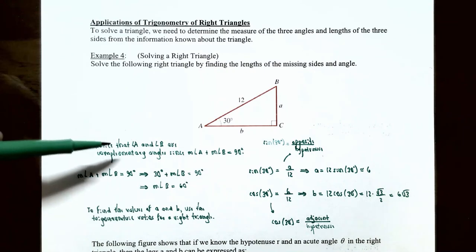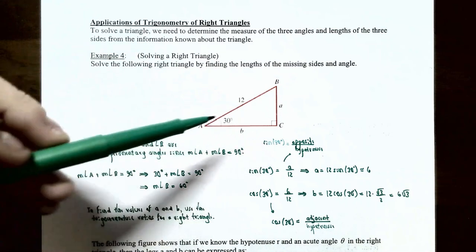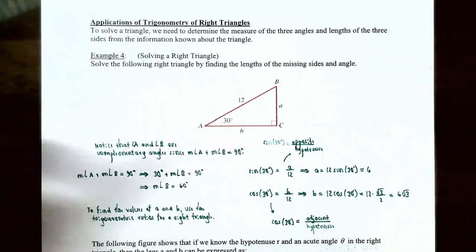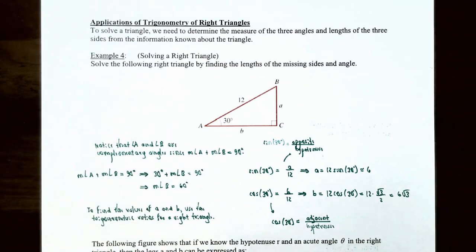Notice that angle A and angle B are complementary angles because we already have a 90-degree angle in this right triangle, and the sum of all interior angles must equal 180 degrees. So if we have 90 degrees and 30 degrees, angle B must equal 60 degrees. We have a 30-60-90 triangle, and we've found all three angles.